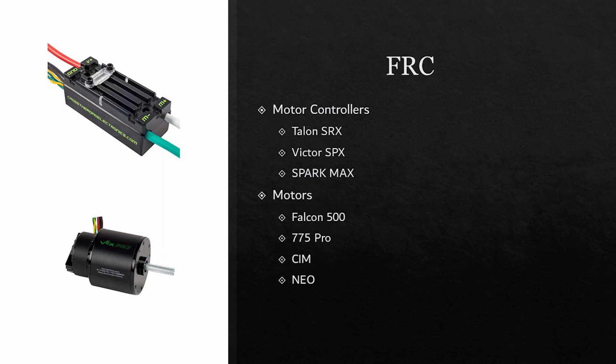The motor controller shown here is a Talon SRX. The SRX offers more control than the SPX because it can be directly controlled. The SPX has to have an SRX to follow and can only copy what the SRX does. This is helpful to be able to group motor controllers together for certain parts of the robot, such as the drivetrain, where all the motors are running at the same speed.